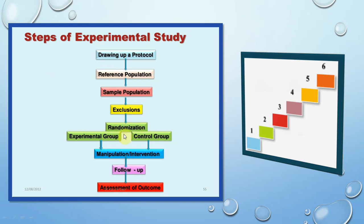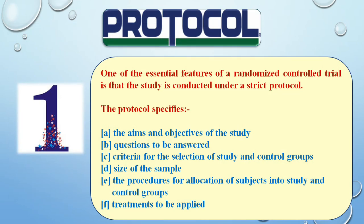After selecting the sample, randomization is performed — the most important part of a clinical trial. Participants are randomly allocated into experimental and control groups using a chit method or lottery using random numbers. Then the intervention is applied: giving one group the new toothpaste and the other group the existing toothpaste, with instructions on brushing frequency. This is followed by a follow-up period depending on the study objective. Finally, outcome assessment is conducted — determining whether the hypothesis is true or false, and whether the new treatment is more efficacious than the existing one.